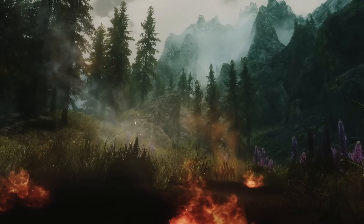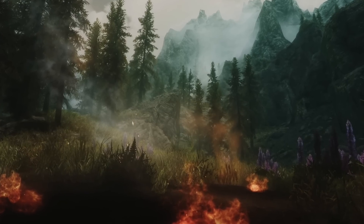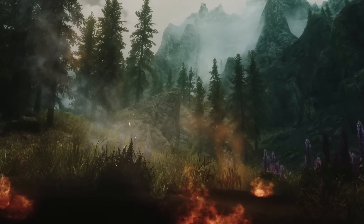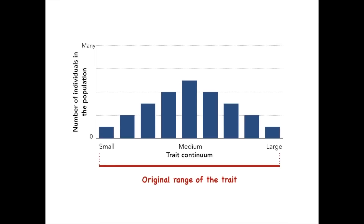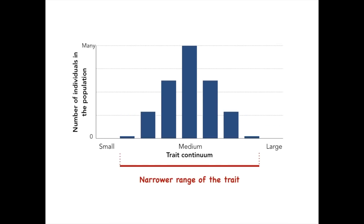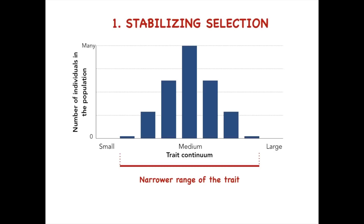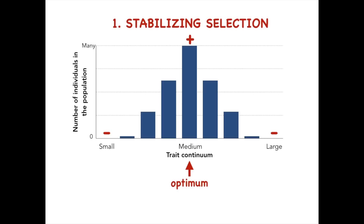So how might this distribution change when the population adapts to a new environmental condition? One way that a population can adapt is by narrowing the range of the trait. This is called stabilizing selection. In this mode of selection, the optimum value is selected for and the extremes are selected against. As a result, we see more individuals with the optimum value after the selection event.